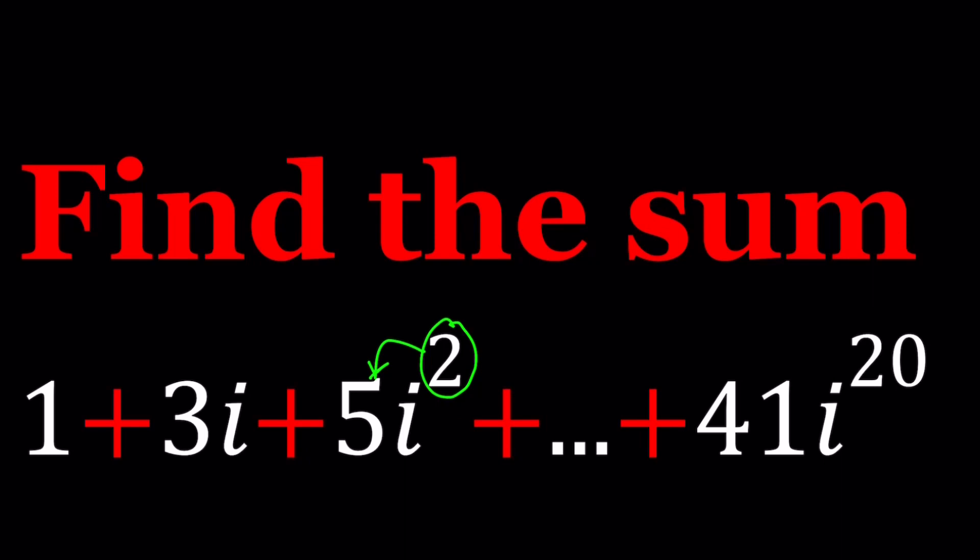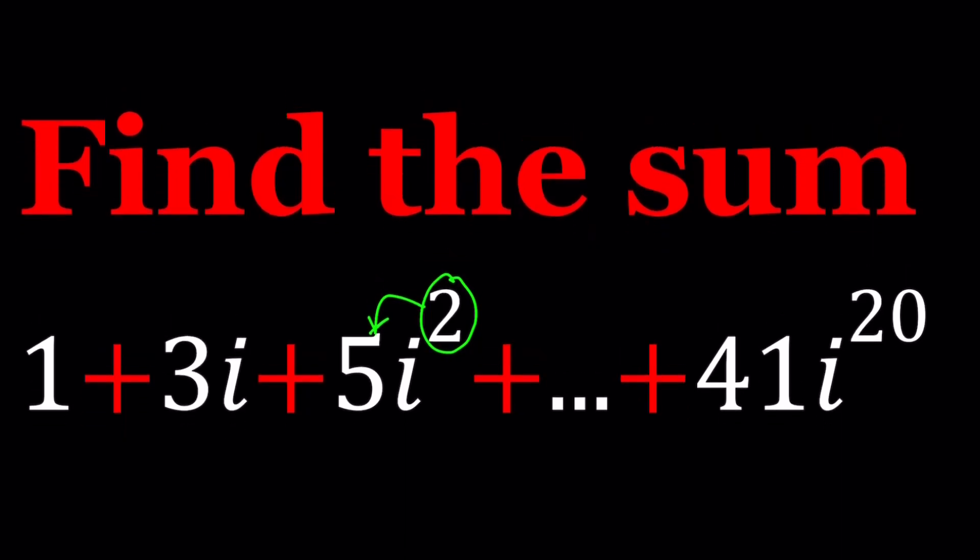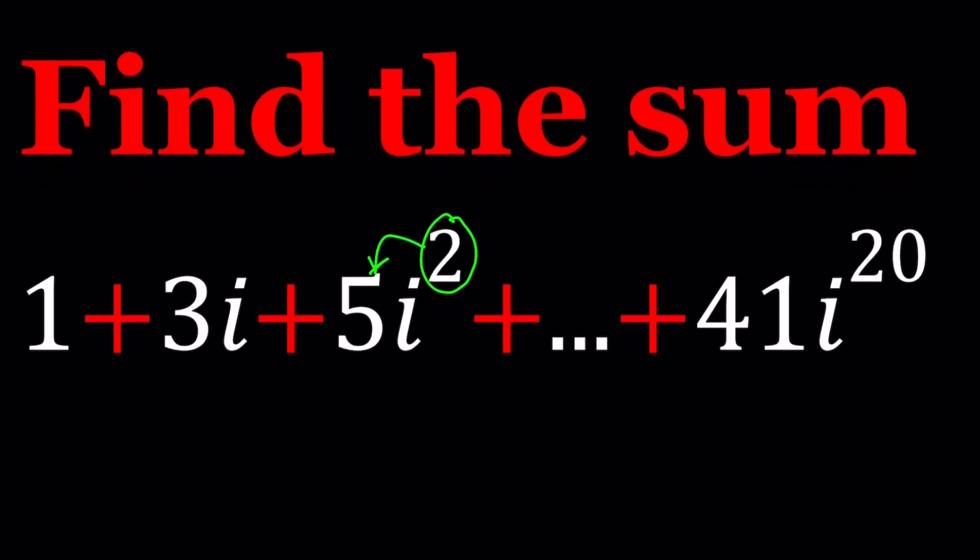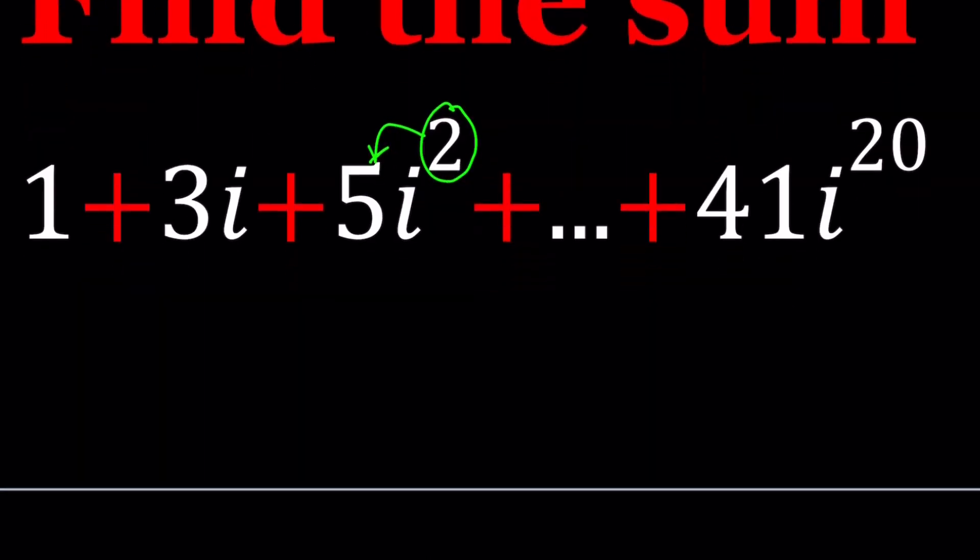Let's go ahead and simplify this—write some of these terms out. What does 5i squared look like? 1 plus 3i. i squared is negative 1, so this is going to become negative 5. I want to write some terms so I can see what that looks like: 7i cubed, and then 9i to the 4th, and then 11i to the 5th, so on and so forth.